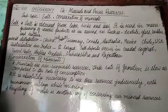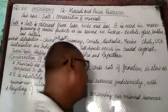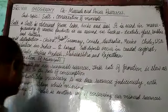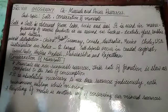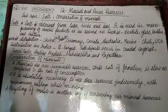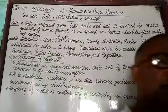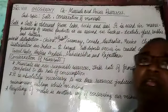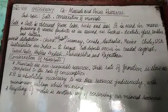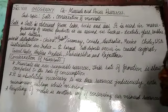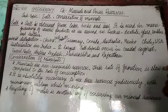अगला तरीका है recycling of metals — पुनर्चक्रण। जैसे लोहे का कोई सामान पुराना हो गया तो उसे गलाकर दूसरा सामान बना लें। लोहा, तांबा, copper, पीतल, brass — इन सभी धातुओं को recycling करके हम इन्हें conserve कर सकते हैं।